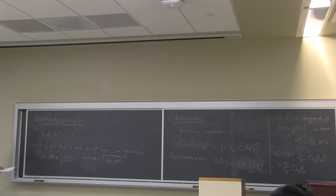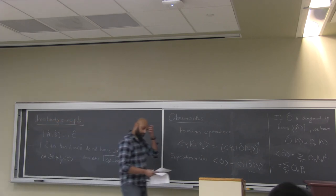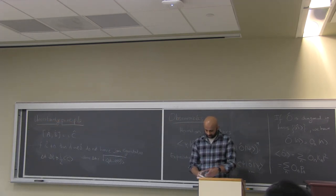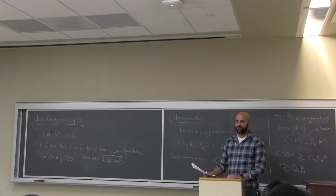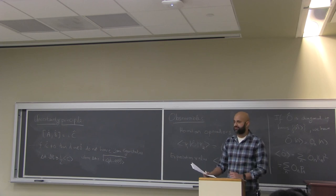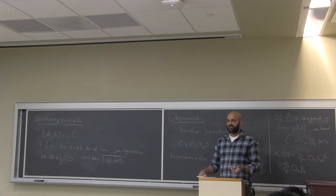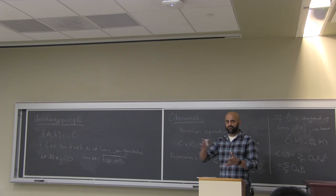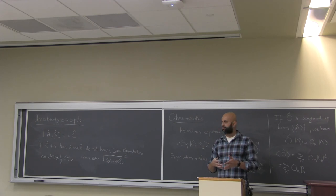From this, we derive the Heisenberg uncertainty principle: ΔA · ΔB ≥ (i/2)|⟨C⟩|, where ΔA = √⟨(A − ⟨A⟩)²⟩ is the statistical uncertainty of A, and ΔB is defined similarly.